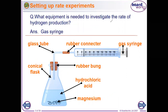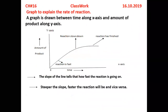The gas syringe detects the gas produced, while magnesium chloride is produced in the flask. Looking at the graph, the slope of the line tells how fast the reaction is going — the steeper the slope, the faster the reaction, and vice versa.